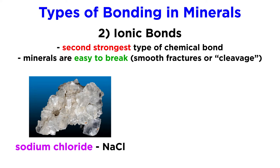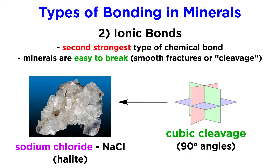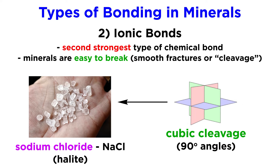Table salt, or sodium chloride, and calcium sulfate are two examples of minerals dominated by ionic bonds. In the world of geology, sodium chloride is called halite and calcium sulfate is anhydrite. Halite exhibits a type of cleavage called cubic cleavage, where the mineral breaks along three orthogonal planes, creating little symmetrical cubes when smashed with a hammer.